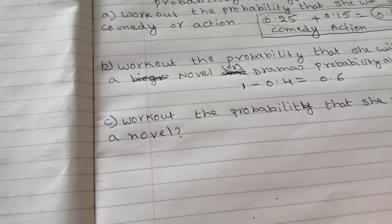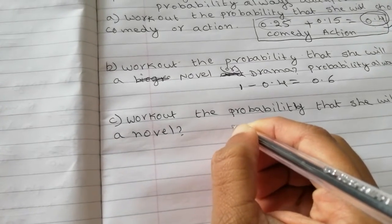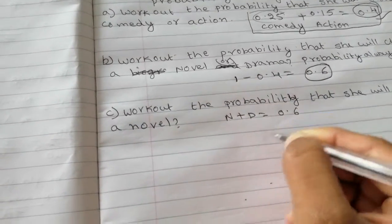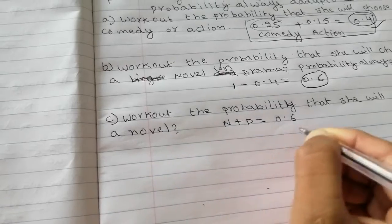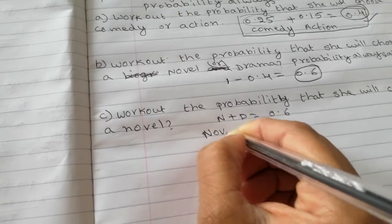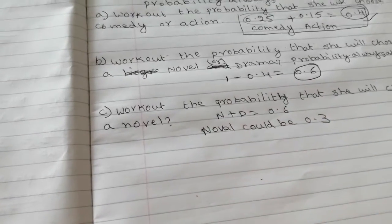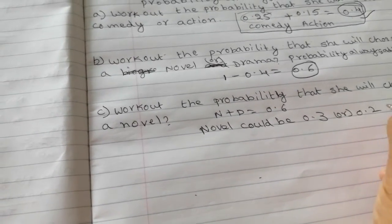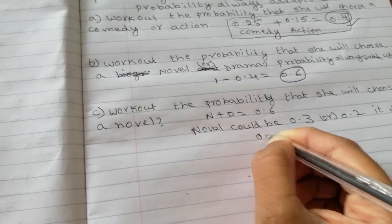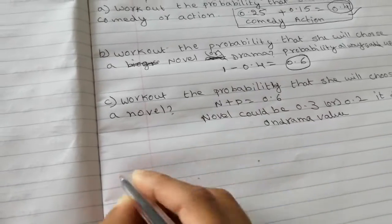Work out the probability that she will choose a novel. So here we know novel and drama can be, novel plus drama can be 0.6. So what I do here, novel could be 0.3 or 0.2. So it depends on drama value.